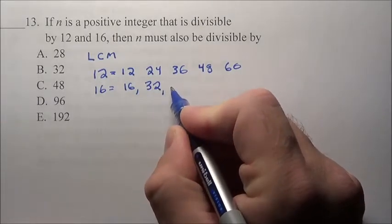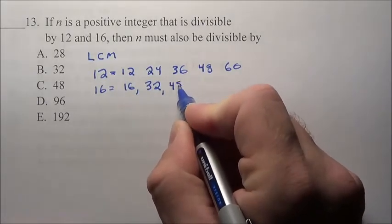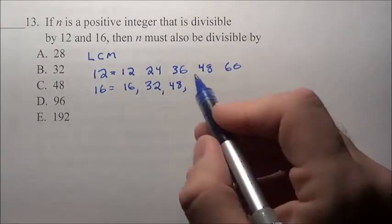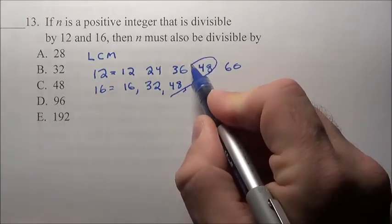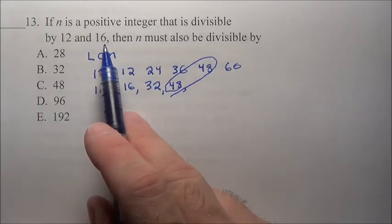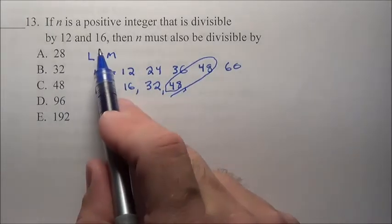So you have 32, 12 times 3 is 48, and you just keep going, but wait a second, I don't need to do it. 48 is a number that both these, 48 can be divided by 12 and 16.